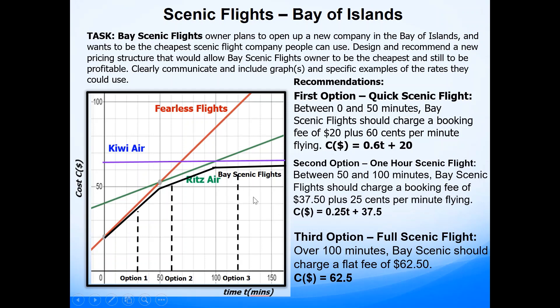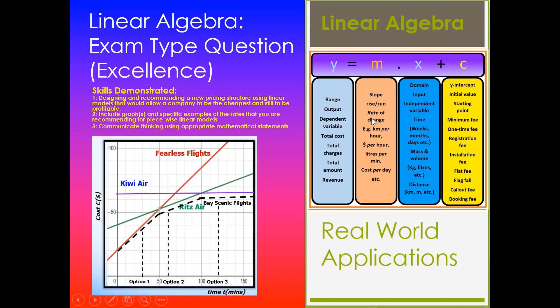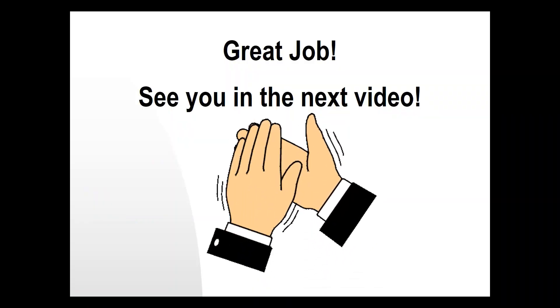Some of you might be thinking you can just start at the y-intercept and draw a straight line — but that would not qualify for excellence because the question also says they still need to be profitable. To recap, this video focused on excellence: designing and recommending a new pricing structure using linear models that allow a company to be the cheapest and still be profitable. The findings were shown on graphs with specific rates using linear models, and clearly communicated using mathematical statements. Thanks so much — I'll see you in the next video.